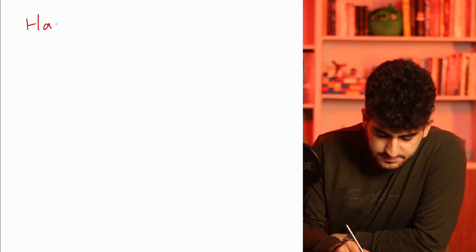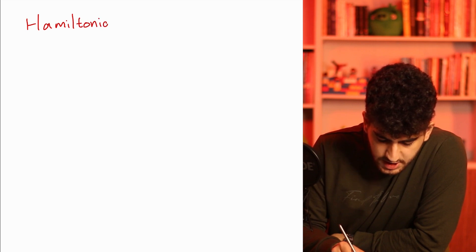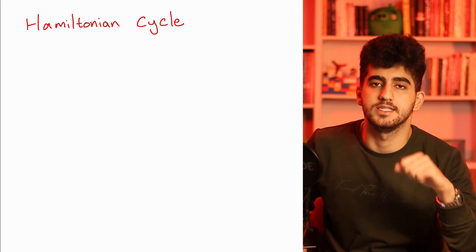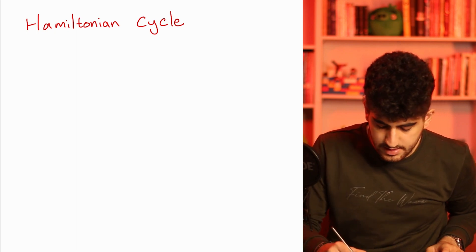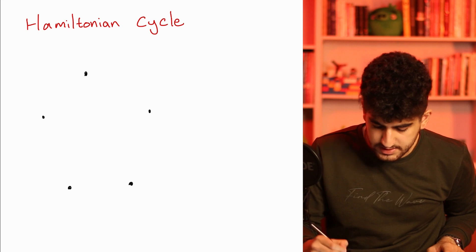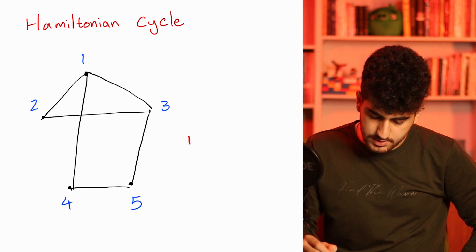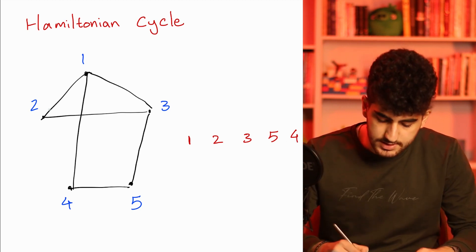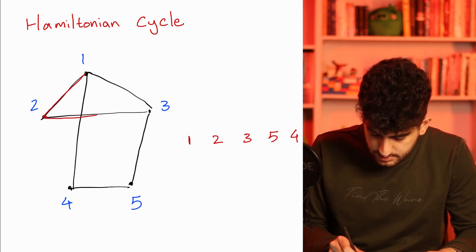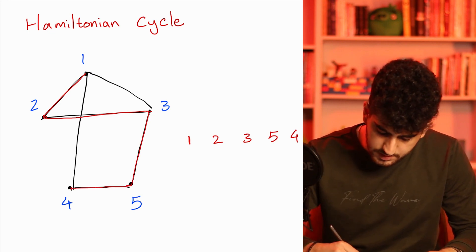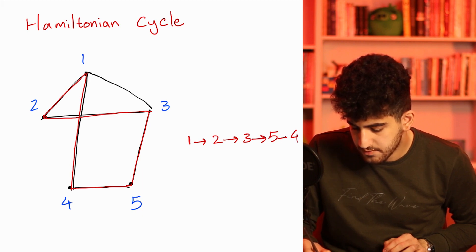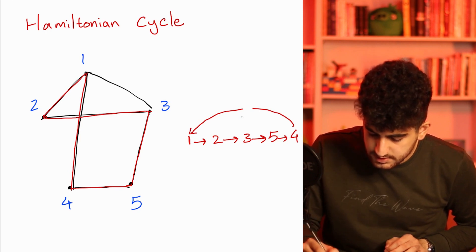The other definition is for a Hamiltonian cycle. The difference is that we have a cycle this time where each vertex appears exactly once. As an example, a Hamiltonian cycle on this graph can be 1, 2, 3, 5, 4, and then from 4 we come back to 1. So this is a Hamiltonian cycle — we go from 1 to 2, from 2 to 3, from 3 to 5, from 5 to 4, and from 4 we come back to vertex 1. I made another video about types of graphs — make sure to watch that one as well.